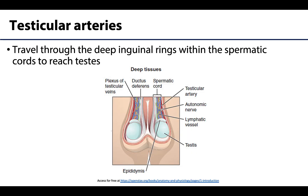The testicular artery will supply the testes and the epididymis. It branches off of the aorta, courses inferiorly along the psoas major muscle, and then makes its way to the deep inguinal ring to travel within the spermatic cord. It then travels through the inguinal canal, exits through the superficial inguinal ring, and enters the scrotum where the testes and epididymis are located.